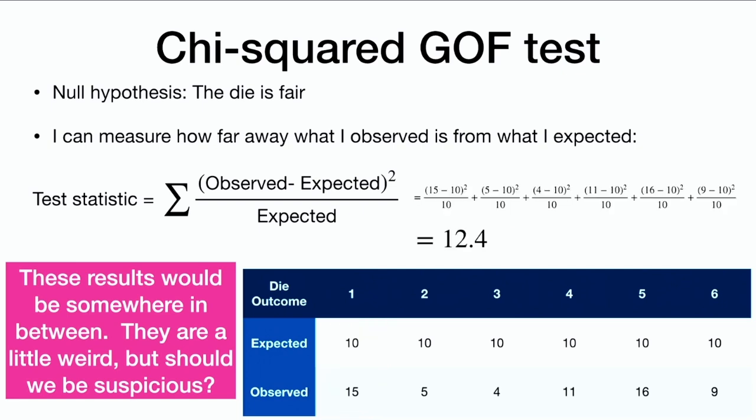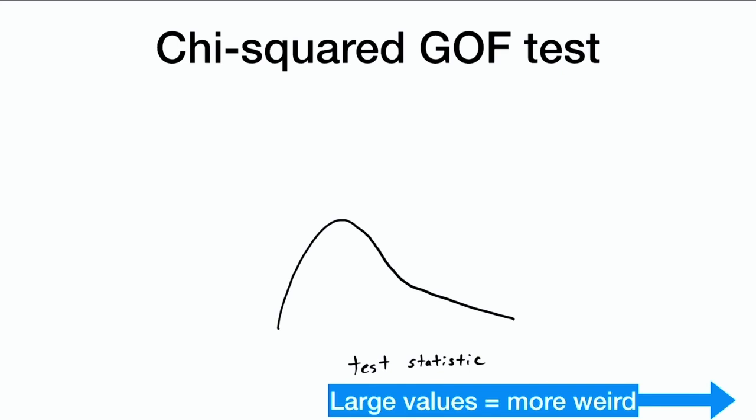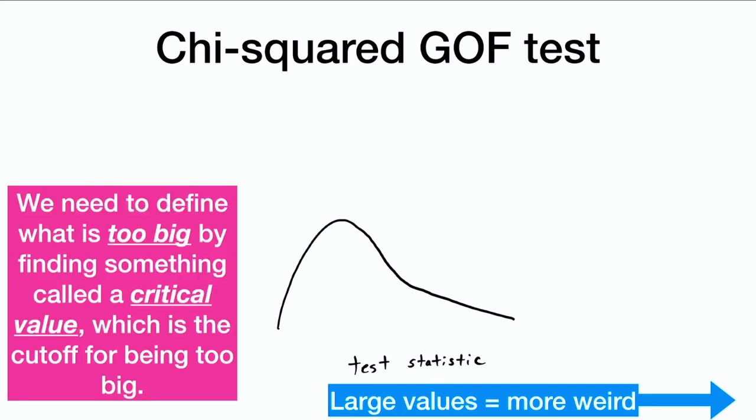When we add up all those numbers, we get 12.4. The question is: is 12.4 weird? Large values are more weird, but we need to define what is too big by finding something called a critical value, which is the cutoff for being too big.